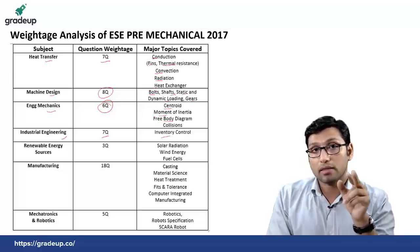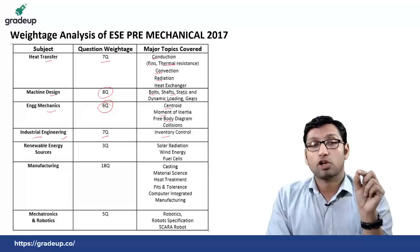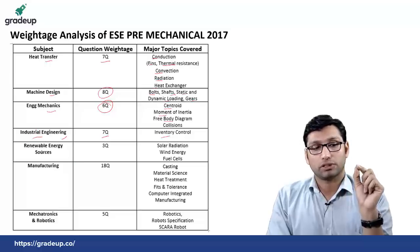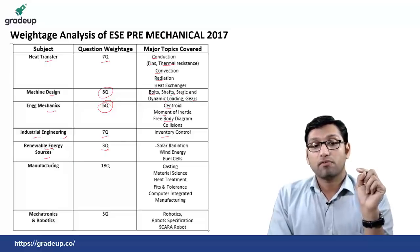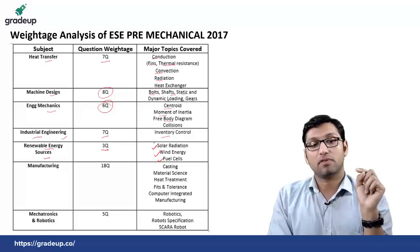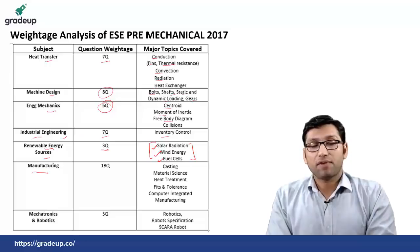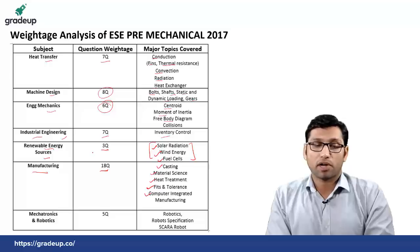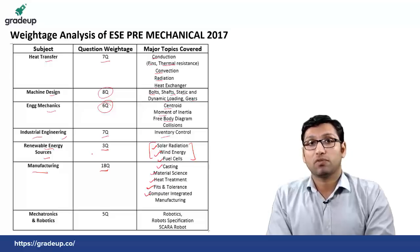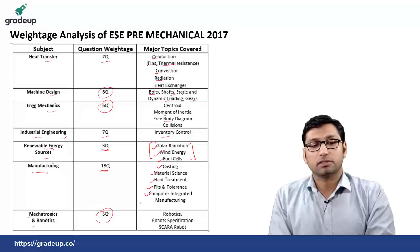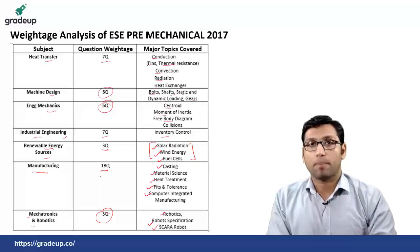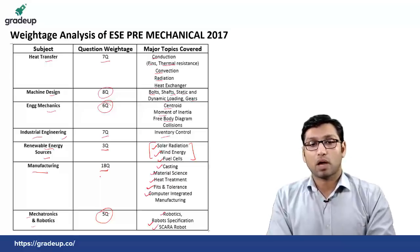Only inventory control was asked in ESE prelims 2017 from the subject of industrial engineering, with totaled 7 questions. From renewable sources of energy there were totaled 3 questions from the topic of solar radiation, wind energy and fuel cell. From manufacturing there were total 18 questions from the topics of casting, material science, heat treatment, fits and tolerance, and computer integrated manufacturing. From mechatronics and robotics there were totaled 5 questions from the topics of robotics, robot specification and SCARA robot. These are the important topics from the weightage analysis of ESE prelims mechanical 2017 paper 2.